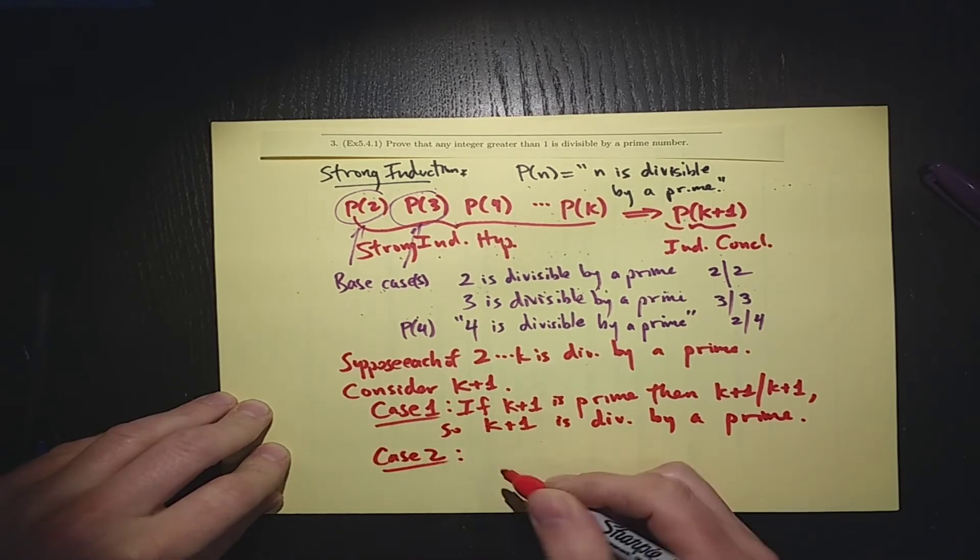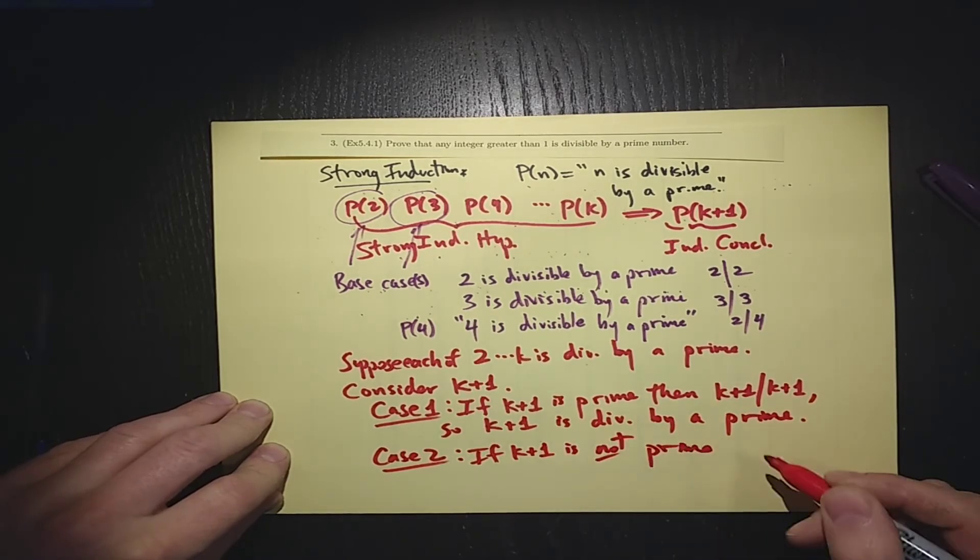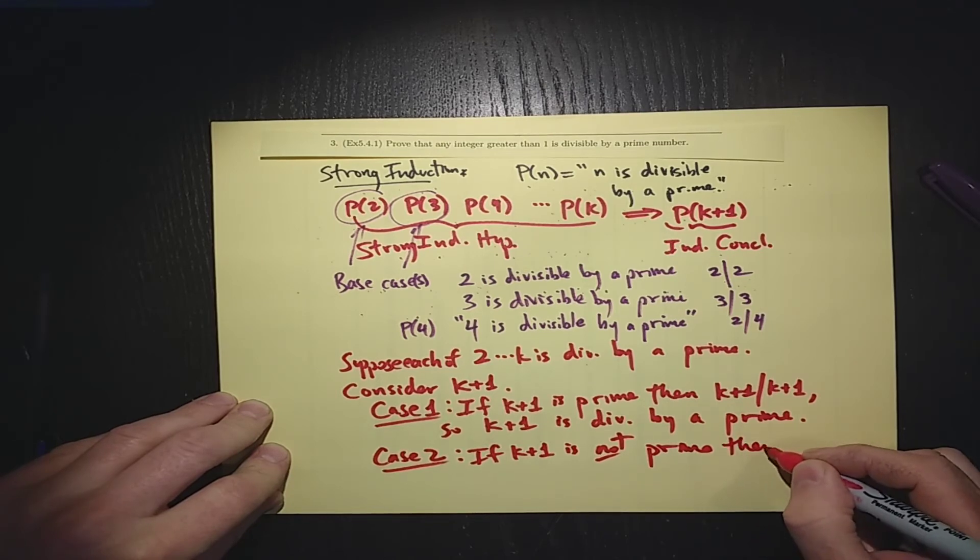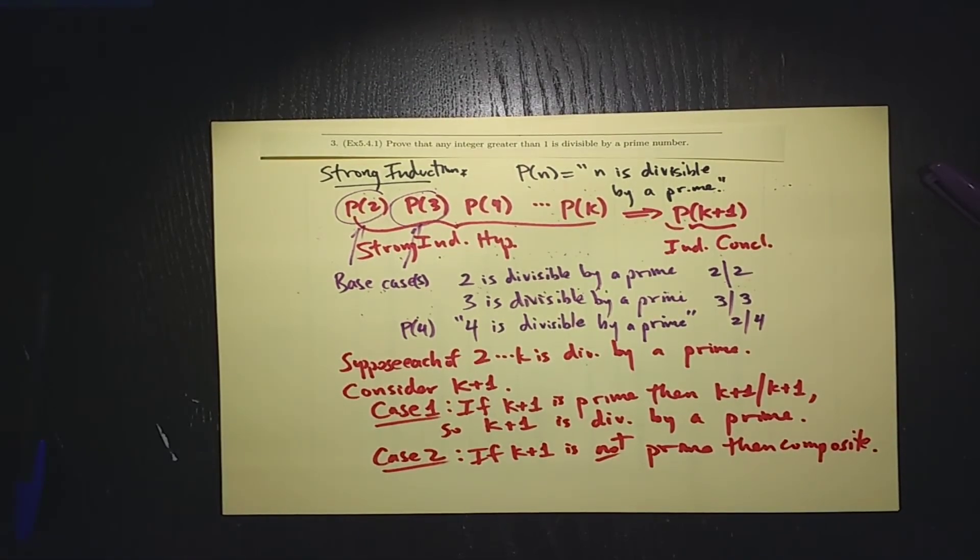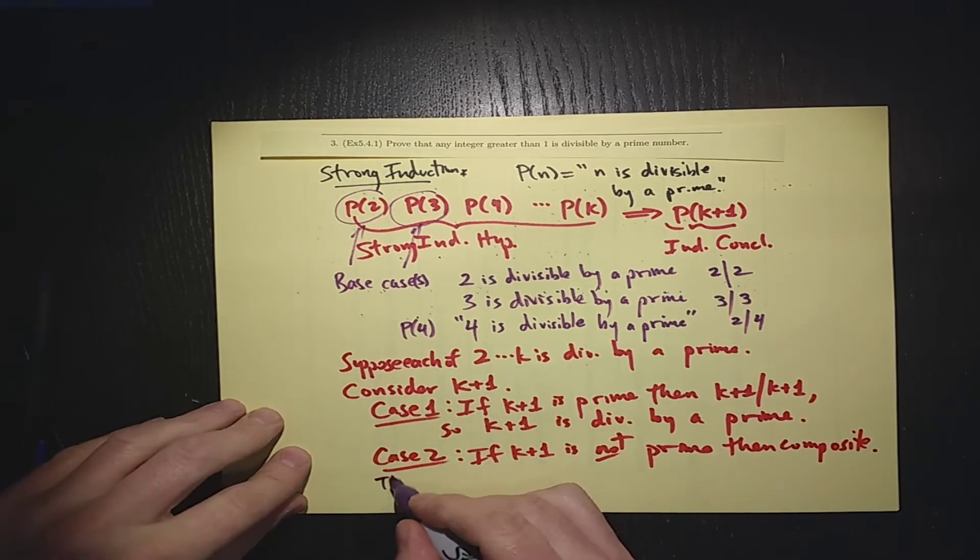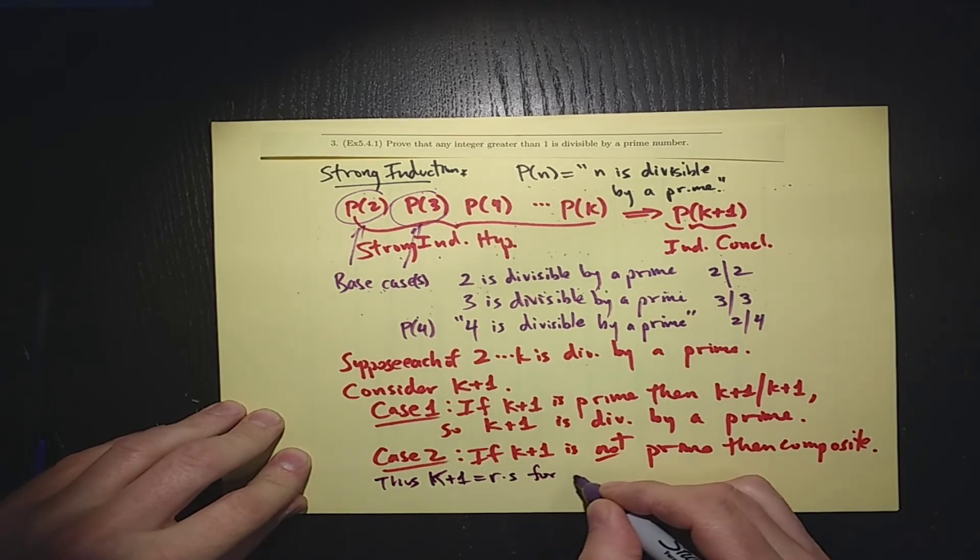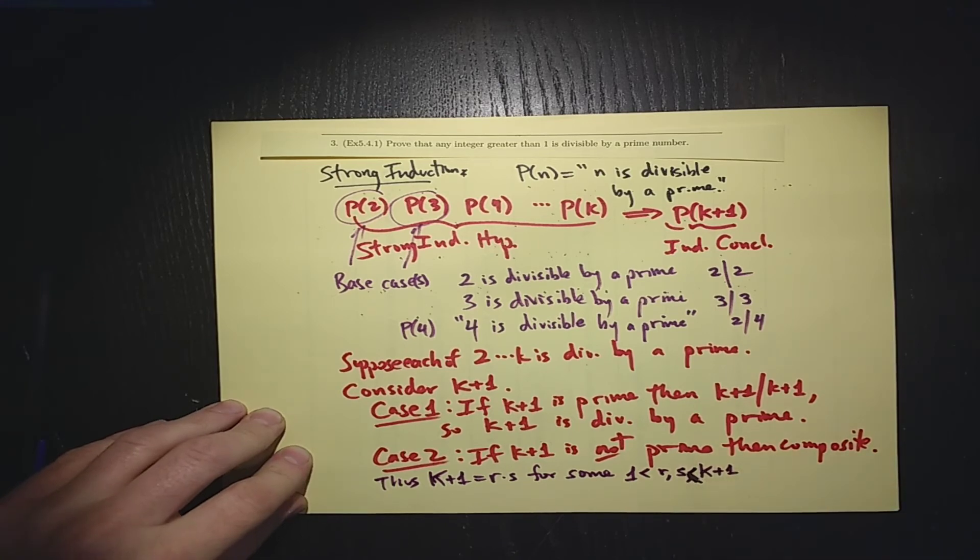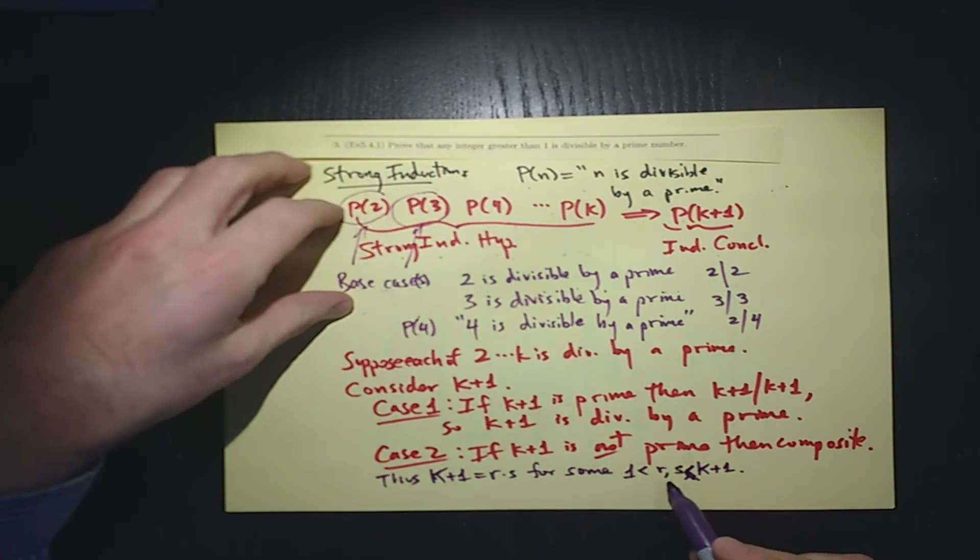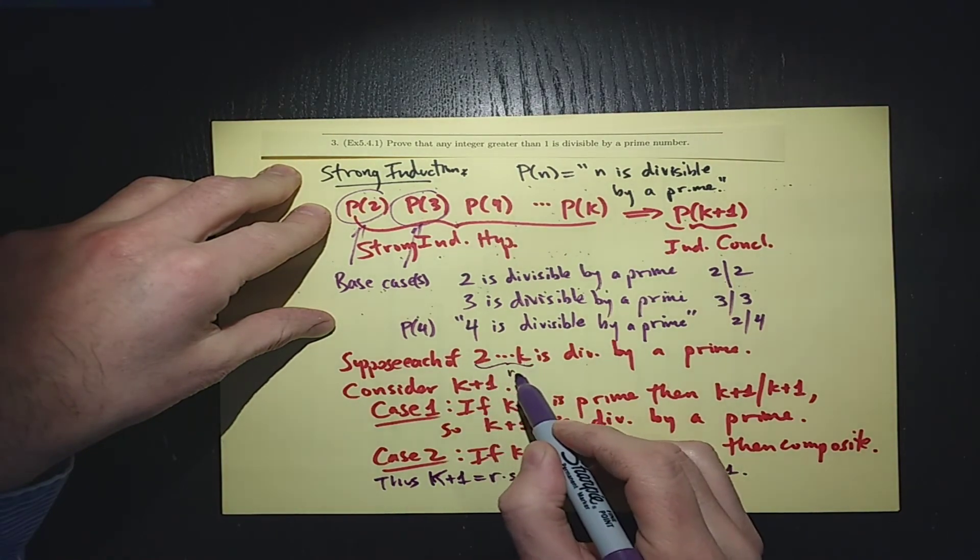And now we need to do case 2. If k+1 is not prime, then it's composite. And the definition of composite means that k+1 is r times s for some integers r and s that are between 1 and k+1. But that means that r and s are less than k+1, r and s will be in here, r and s are in there.